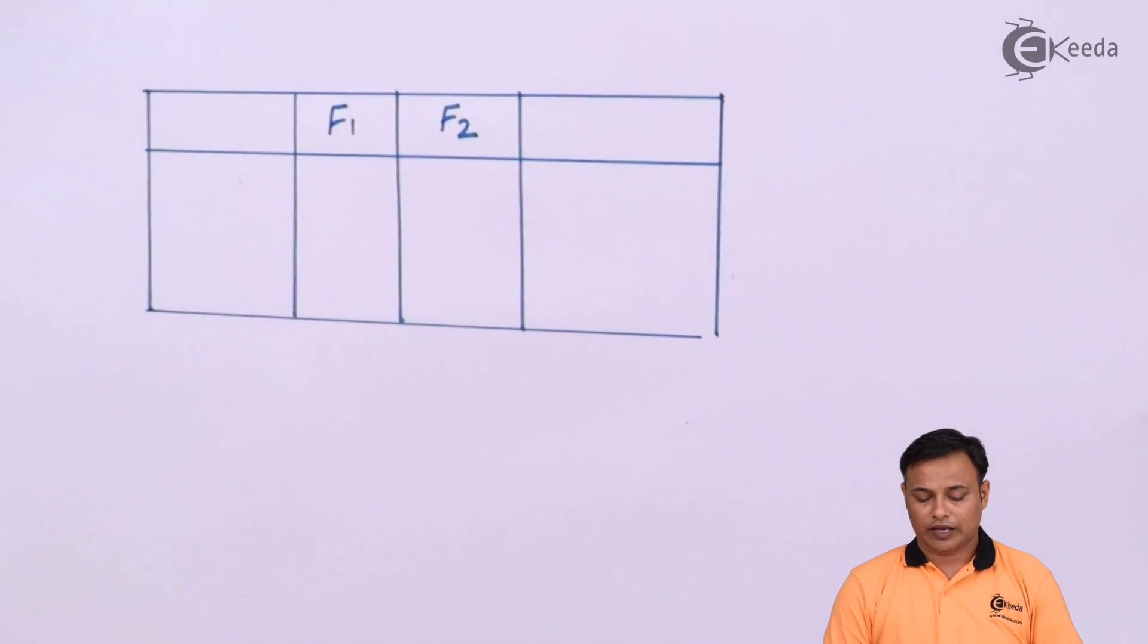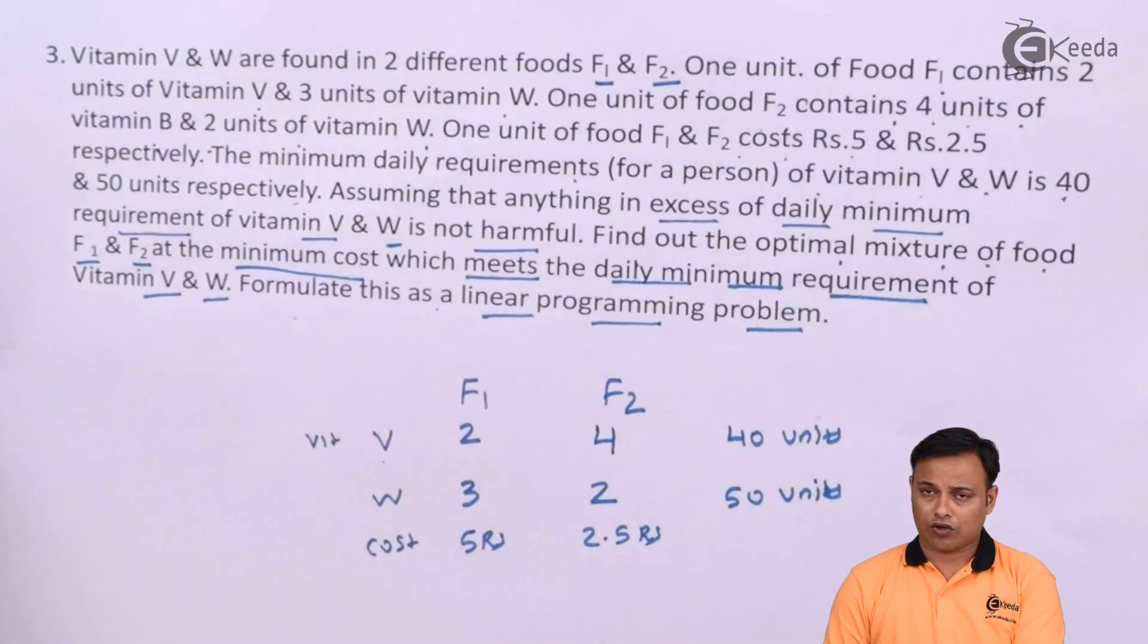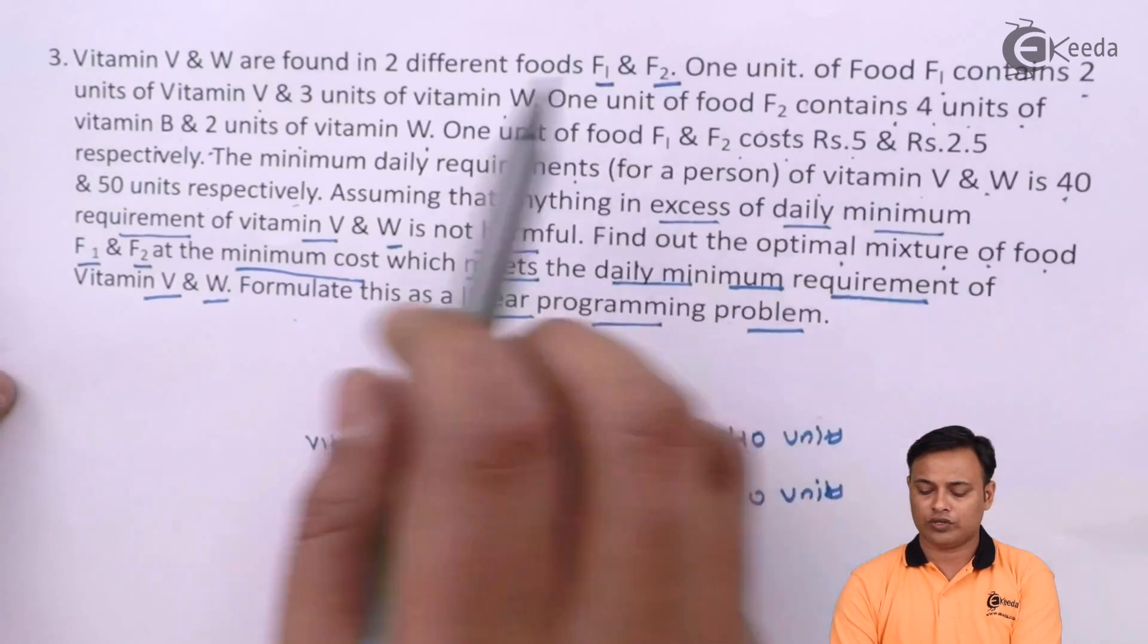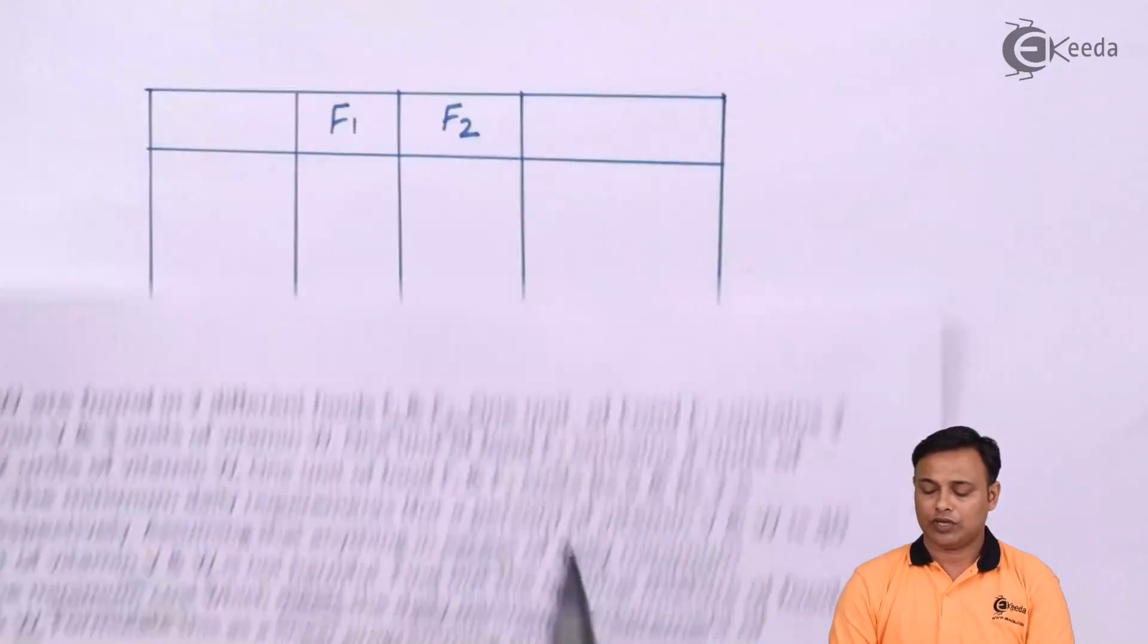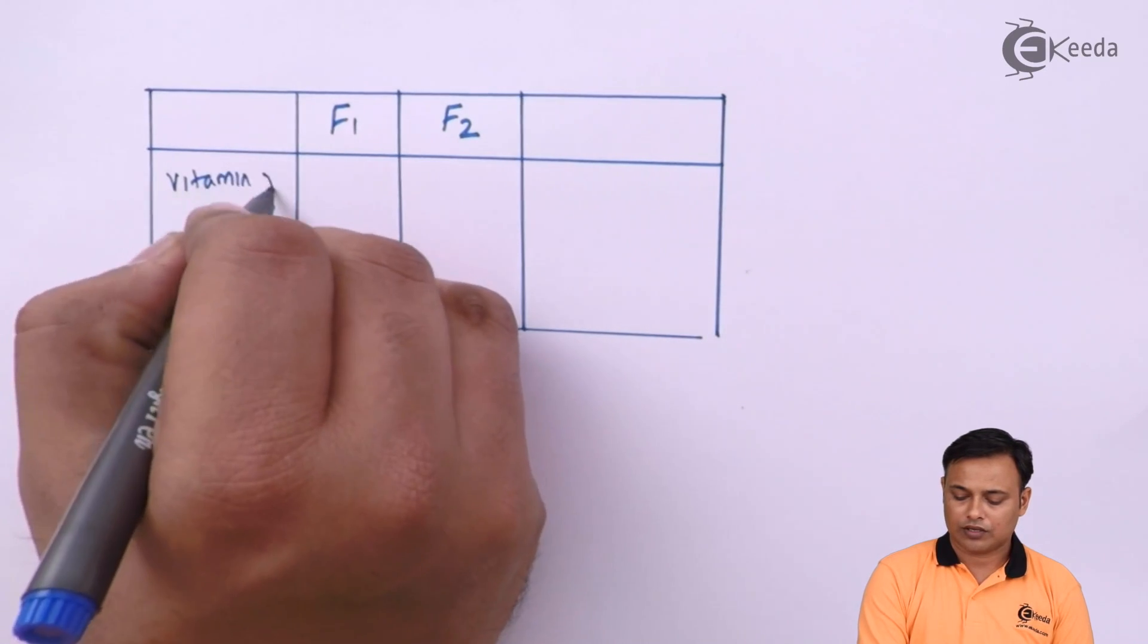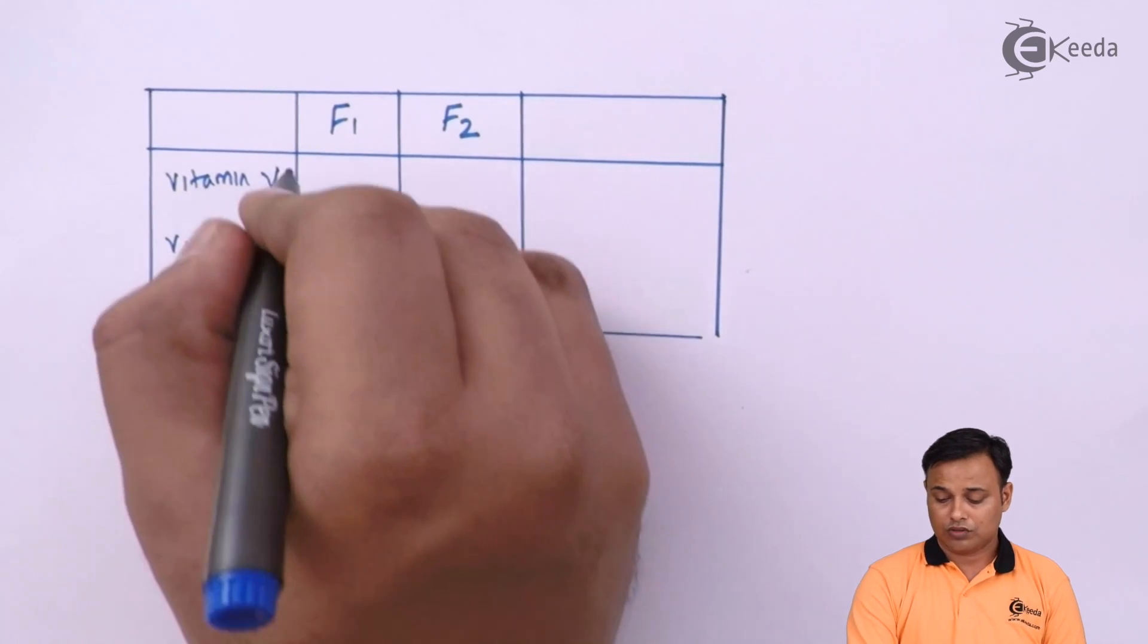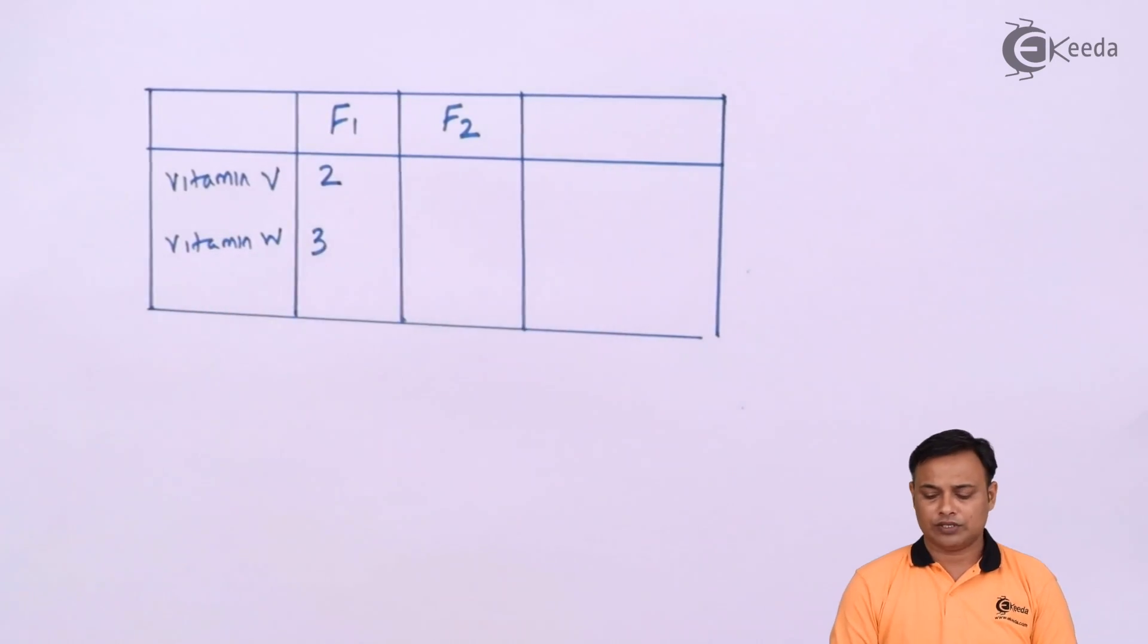What are my constituents of this food? One unit of F1 contains 2 units of vitamin V and 3 units of vitamin W. F1 in one unit, vitamin V will get 2 units, vitamin W will get 3 units.